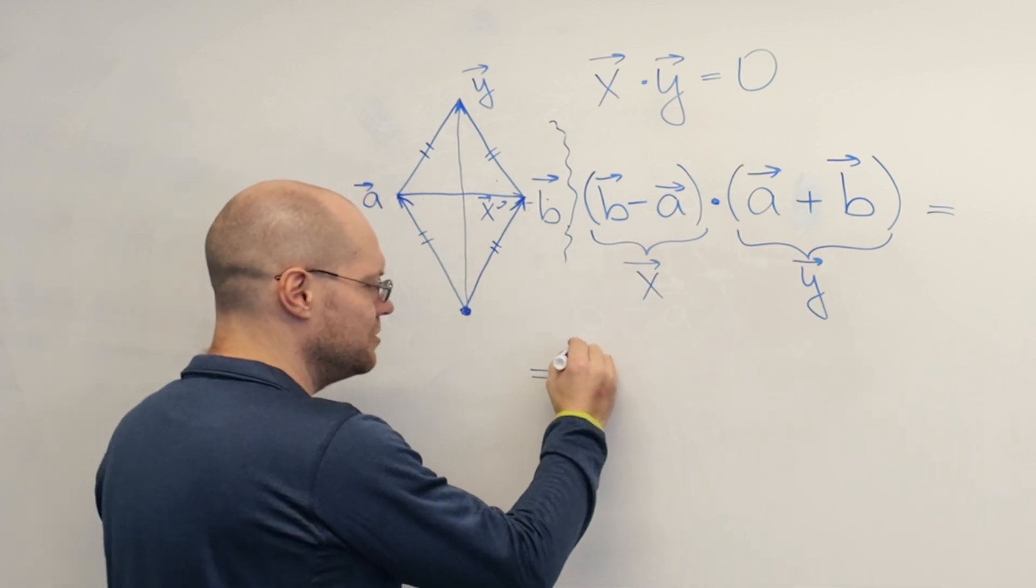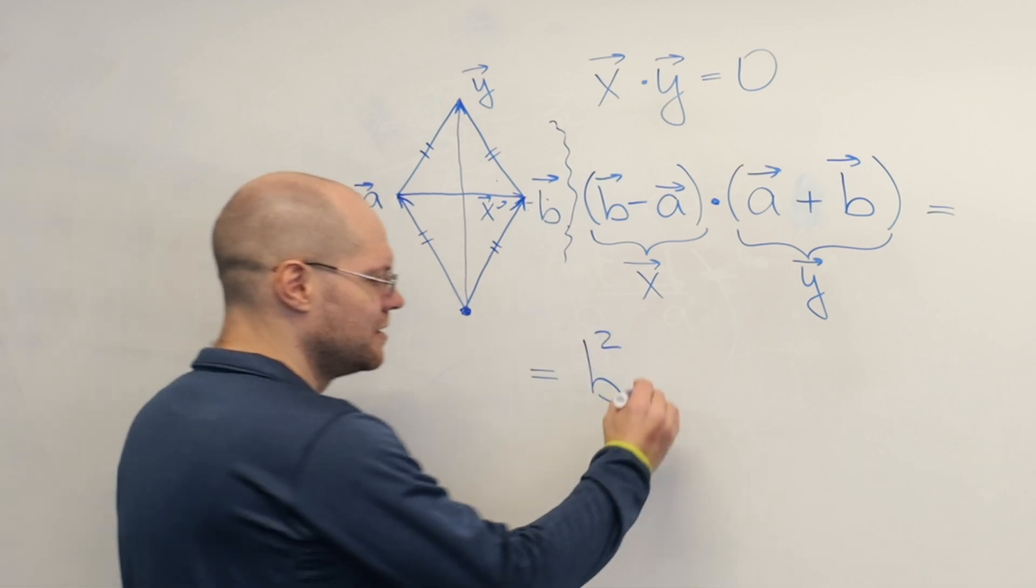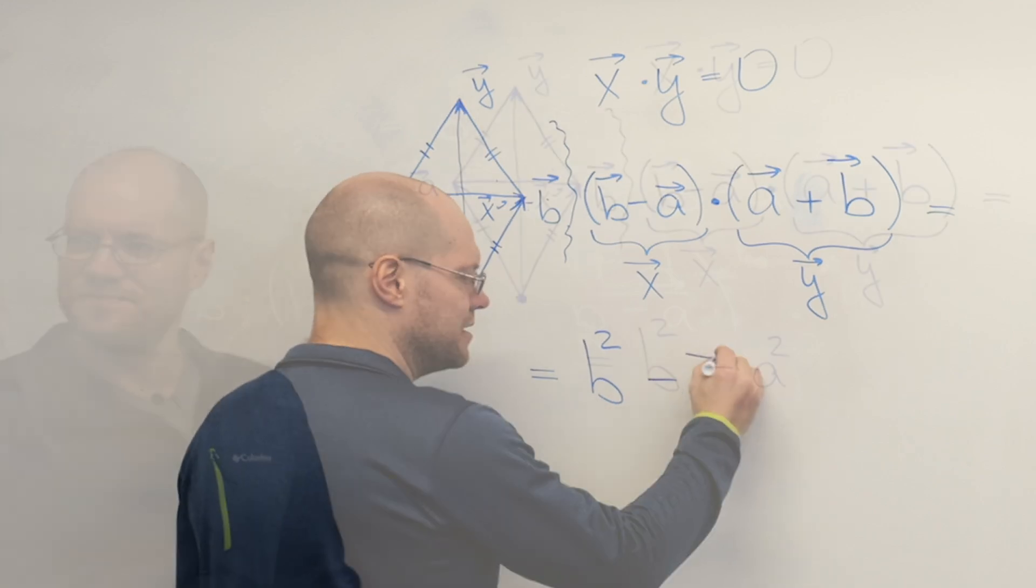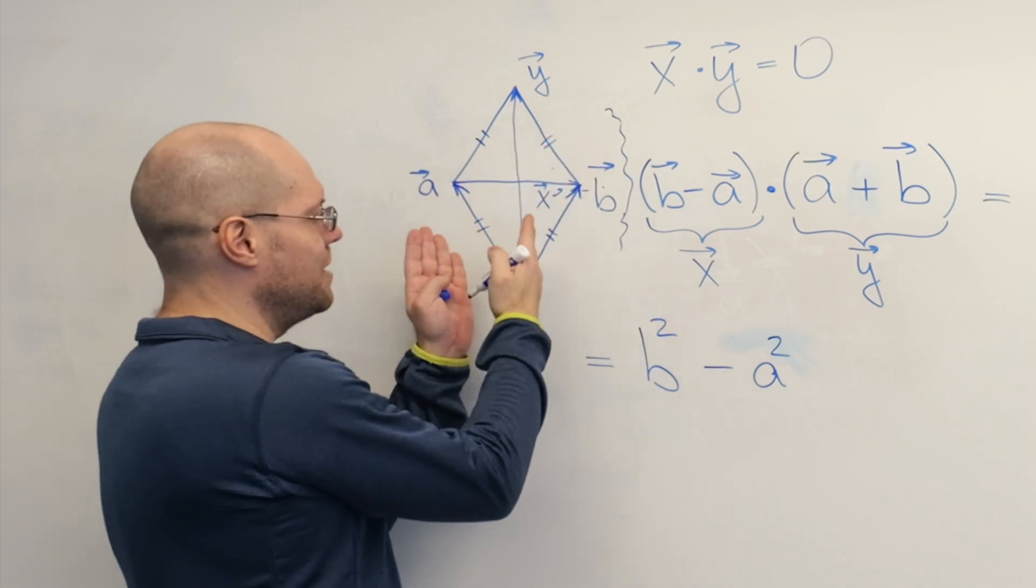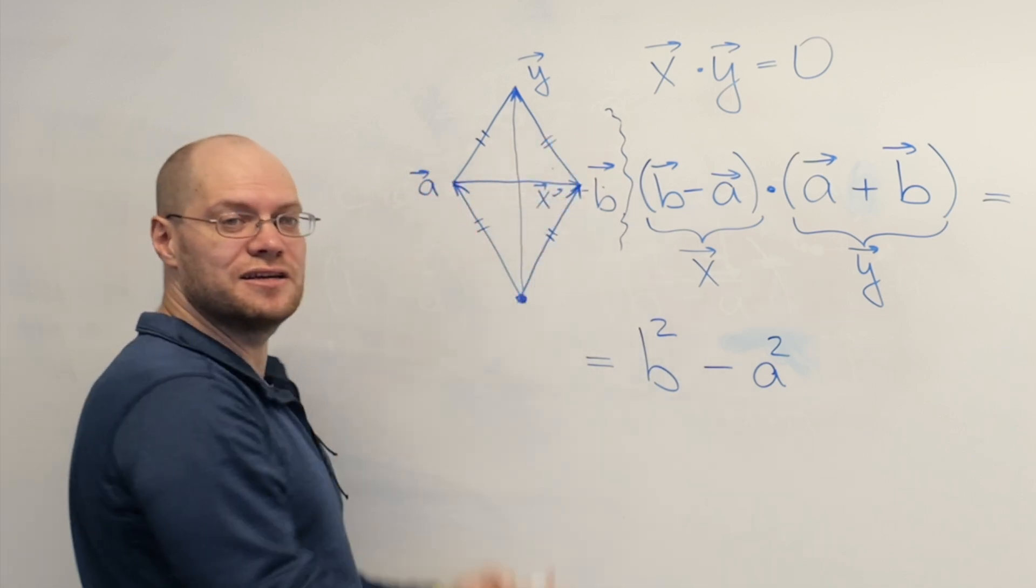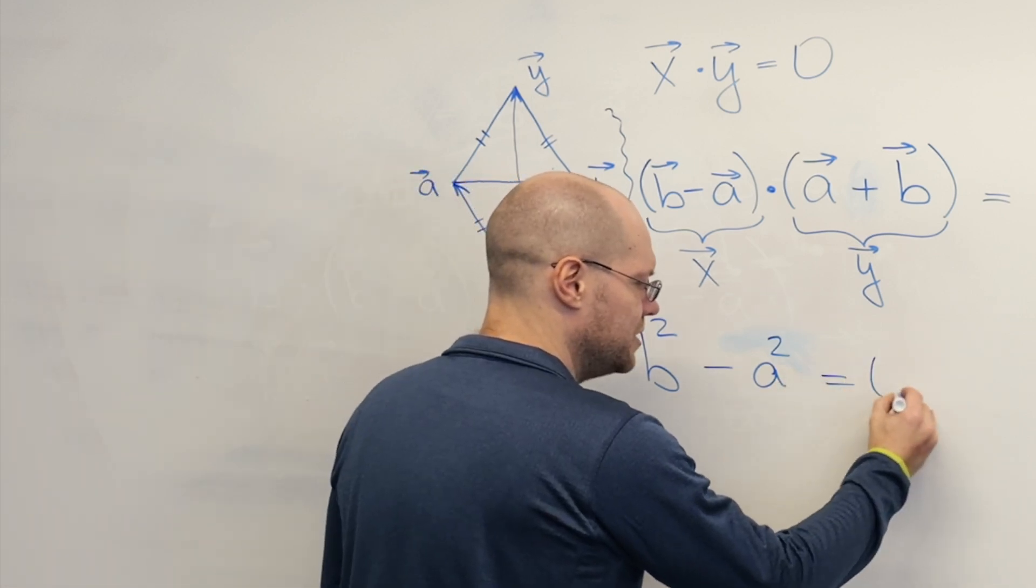But b dot b, using our convention, is b squared. It's the length of the vector b squared minus a squared. And because by the statement of a problem we have a rhombus. A rhombus is a parallelogram whose sides are equal. The length of b equals the length of a. So this is zero. Q, E, D.